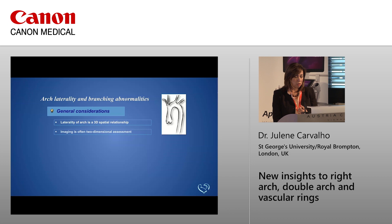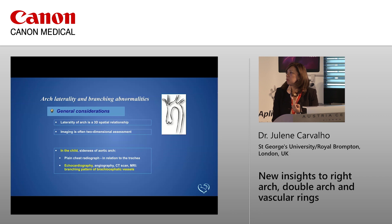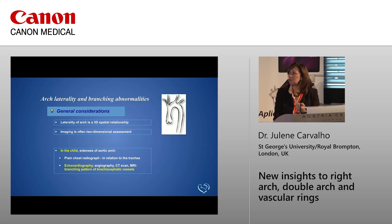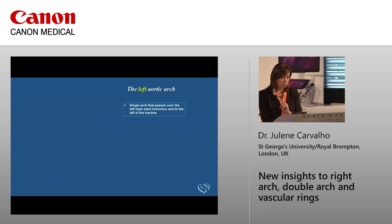This is really a three-dimensional structure, but we are assessing it on a two-dimensional scan. In children, the side of the aortic arch can be seen on a chest radiograph in relation to the trachea, and we also use echocardiography and CT scan. The main approach with all these techniques is to look at the branching pattern of the aorta, which is key for diagnosing right or left aortic arch.